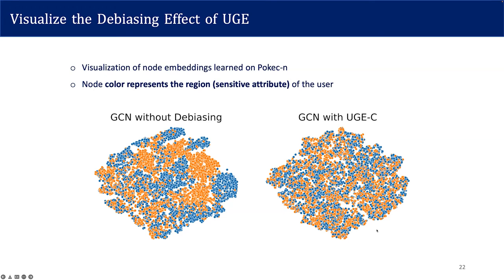Without any debiasing method, we can see that the embeddings can be clearly clustered by the region of users, which means the embeddings contain region information. But after applying UGE-C, we can see that the node embeddings can no longer be differentiated by region of users, indicating we successfully removed the region information from the embeddings.